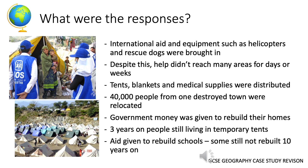Tents, blankets and medical supplies were distributed, however in certain areas this took a long time to reach. 40,000 people from one destroyed town were relocated — moved to a new town that had been built — and government money was given to rebuild their homes. However, some people had to use this money to buy food instead of rebuilding, meaning some were still homeless many years on. Three years on, people were still living in temporary tents, and aid was given to rebuild schools but some still were not rebuilt ten years after the event.